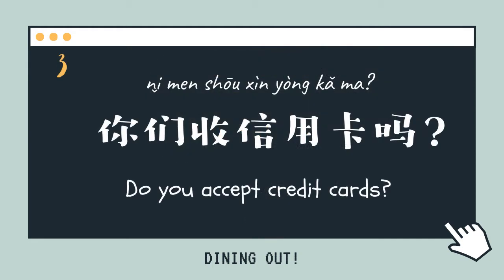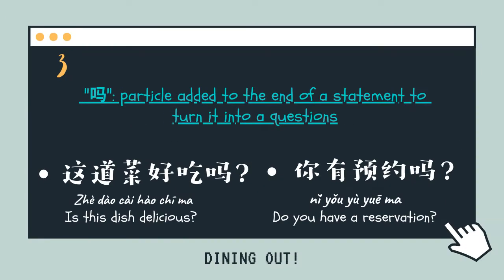你們收信用卡嗎? Do you accept credit cards? 嗎 is a particle added to the end of a statement to turn it into a question. It is usually a yes or no answer question.